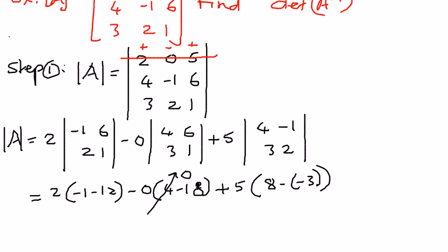We got all the elements down and now it is a matter of simplifying. This is going to be 2 times (-1 plus -12 is -13), then plus 0 which we don't need to write, plus 5 times (8 plus 3 is 11).